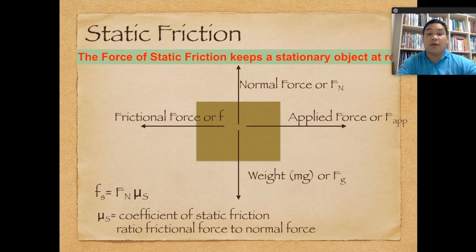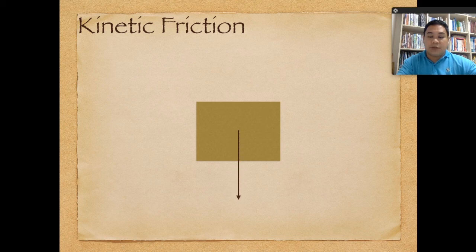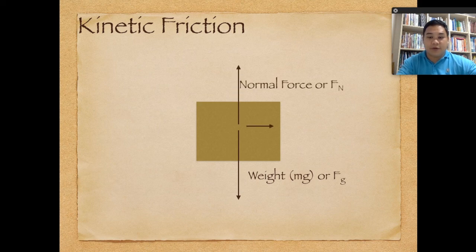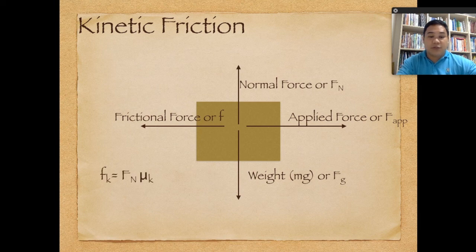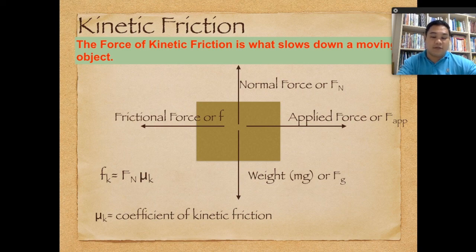The other type is kinetic friction, applied when an object is moving at constant velocity. The weight equals mg or Fg, we have the normal force Fn, the applied force, and the frictional force. The equation is: Fk equals normal force multiplied by the coefficient of kinetic friction. Kinetic friction slows down an object that is moving. We represent this as mu sub k, defined as the ratio of frictional force to normal force.